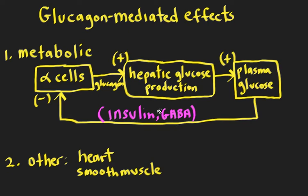If we start with the basic feedback loop for stabilization of plasma glucose focusing on glucagon, we can see here that we have our alpha cells, which are located in the pancreatic islets of Langerhans. They synthesize and secrete glucagon, and glucagon's primary target for stabilization of plasma glucose is the liver, where it increases hepatic glucose production, which releases glucose into the plasma and raises the plasma glucose.